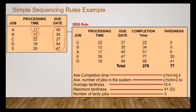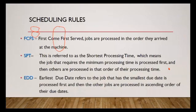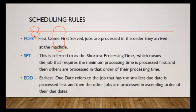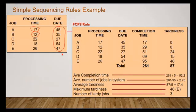A very quick recap: we were looking at single machine scheduling. We talked about the definitions of average completion time, and then we talked about the three scheduling rules — first come first serve, shortest processing time, and earliest due date. We then experimented and looked at examples for each of them. Thank you. Cheers. Bye.